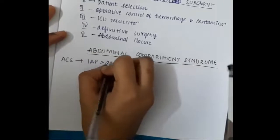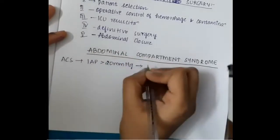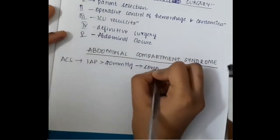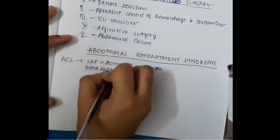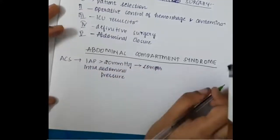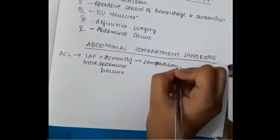Hello friends, let us now learn some important points about Abdominal Compartment Syndrome. Abdominal Compartment Syndrome is when the intra-abdominal pressure is more than 20 millimeters of mercury, then we call it as Abdominal Compartment Syndrome.